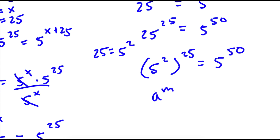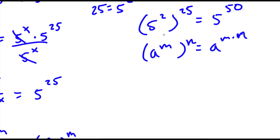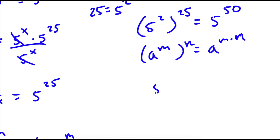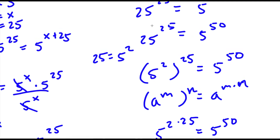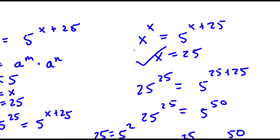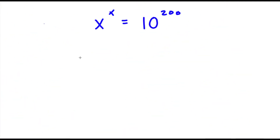Now, if I have something in the form a to the power of m to the power of n, this is equal to a to the power of m times n. So 5 to the power of 2 to the power of 25 equals 5 to the power of 2 times 25, which gives 5 to the power of 50. Since 2 times 25 is 50, we have 5 to the power of 50 is equal to 5 to the power of 50, confirming our solution is correct. Make sure to stay until the end of the video where I have a bonus problem similar to this one which you guys can try to solve.